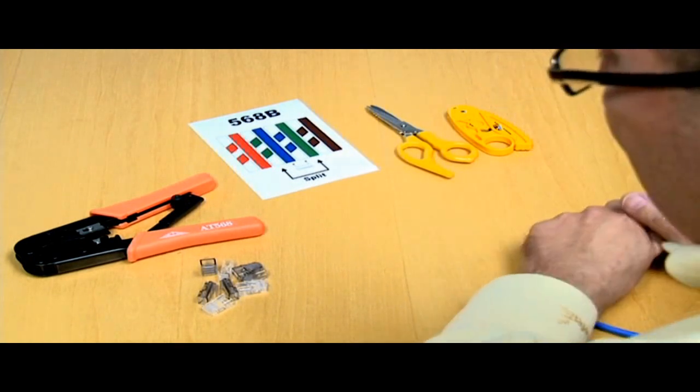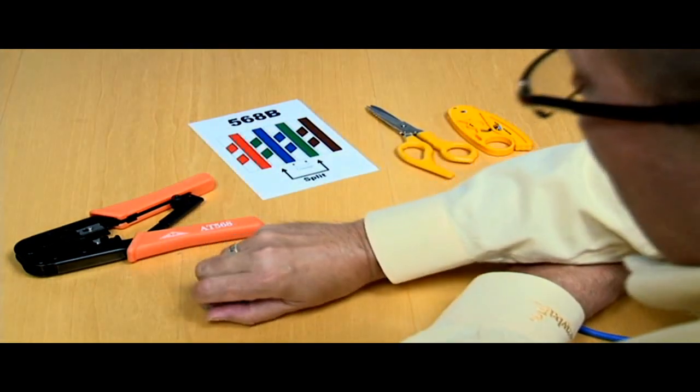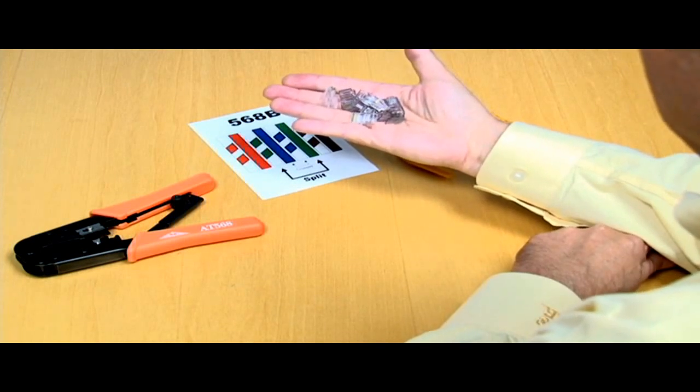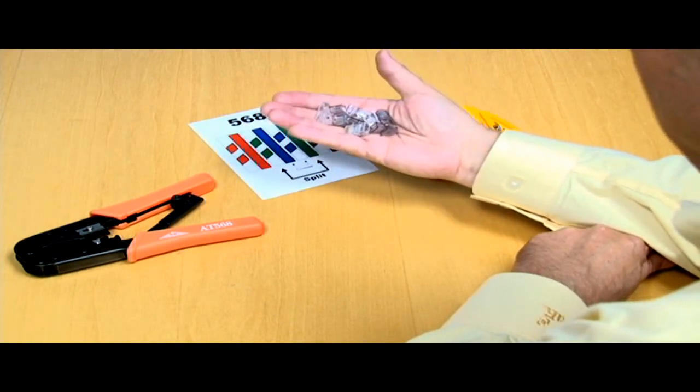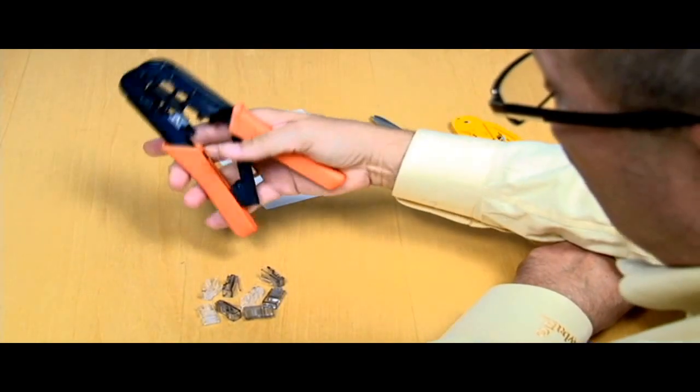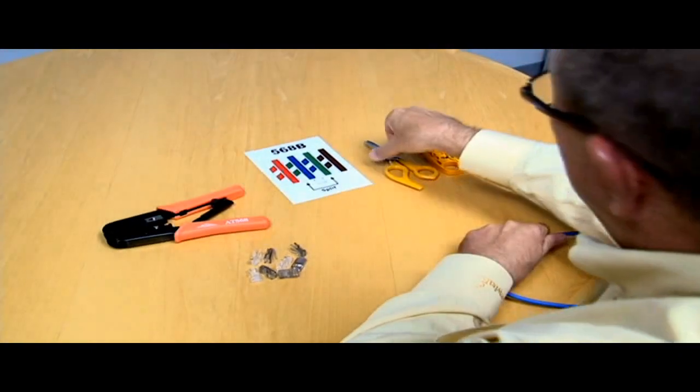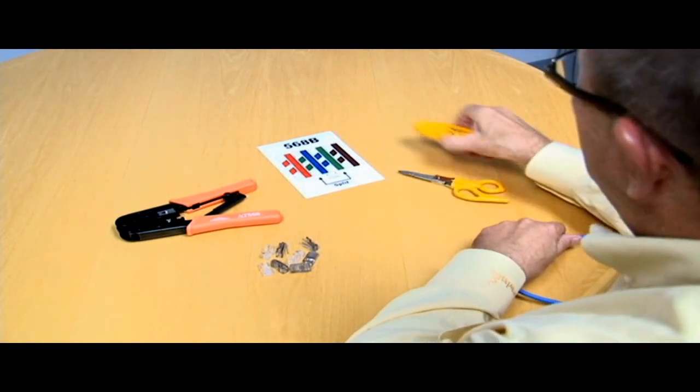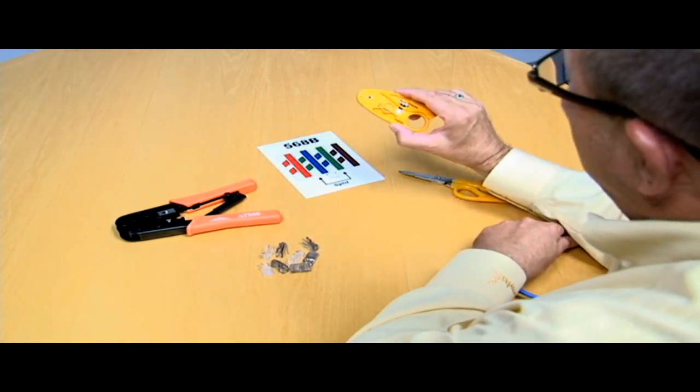In order to do that, we need some things. We need some modular plugs to put on the end of the cable. These are 8 conductor modular plugs, sometimes called RJ45s. We need a tool to crimp that plug down onto the cable, a pair of scissors, and a stripping tool in order to strip the jacket.